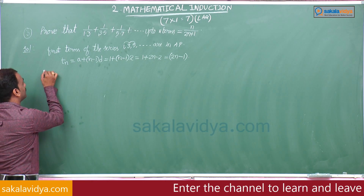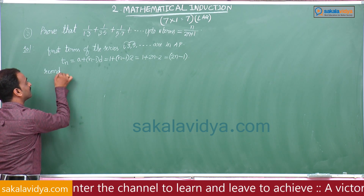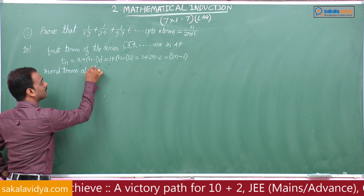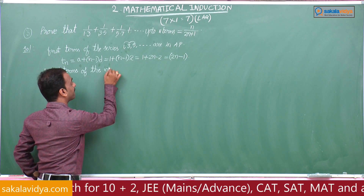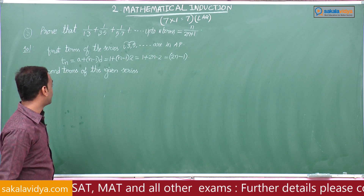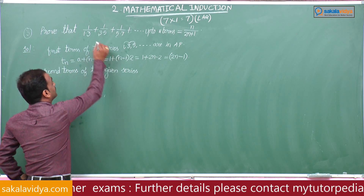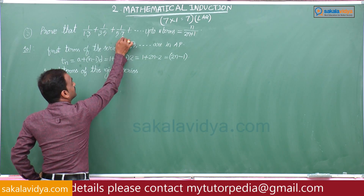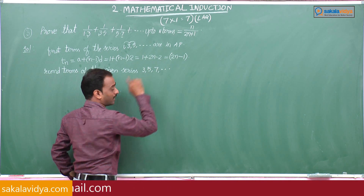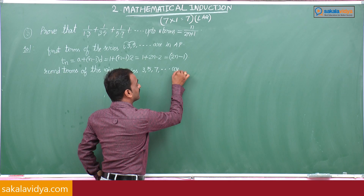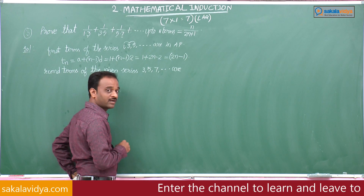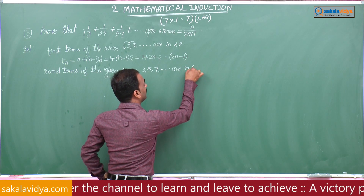Next, the second terms of the given series are 3, 5, 7, and so on, which are also in arithmetic progression with common difference 2.